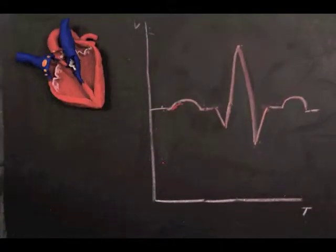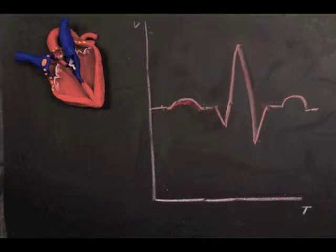The P wave represents the depolarization of the SA node and spread of current into the atria to the AV node or atrial depolarization.